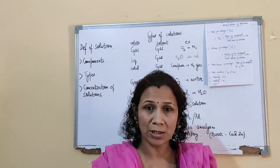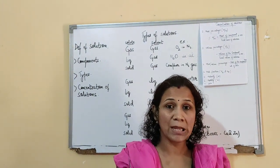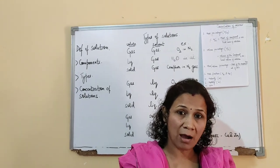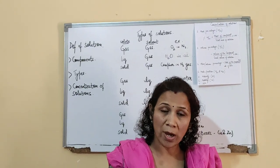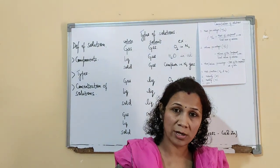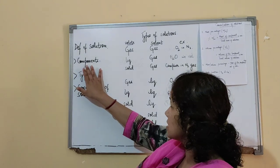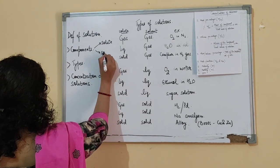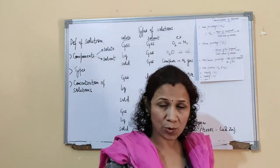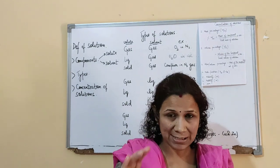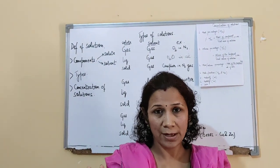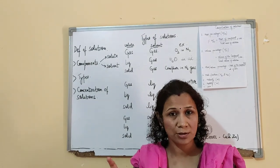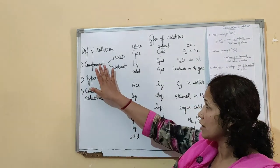In solutions, we will mainly focus on the liquid form. We will concentrate on those solutions which have the main component as liquids. In a binary solution there are two components — one is in larger quantity and the other is in lesser quantity. We call these solute and solvent. The one which is in larger quantity is the solvent, and the one which is in lesser quantity is the solute. For example, if I dissolve one spoon of sugar into a glass of water, the sugar is the solute and the water is the solvent.